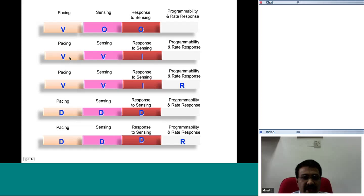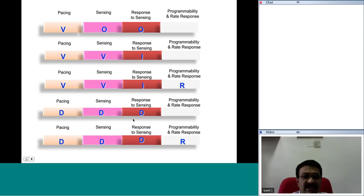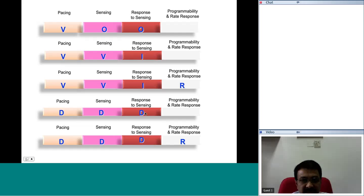In clinical practice, we implant devices either in VVI mode or DDD mode. A VVI mode means the pacemaker paces the ventricle, senses what is happening in the ventricle, and the response is I — standing for inhibited — meaning if the lead senses intrinsic electrical activity, it will not pace. The commonest dual chamber pacing modality is DDD — D means it paces dual chambers (both atrium and ventricle), D means it senses both chambers, and D means it may either inhibit or trigger.